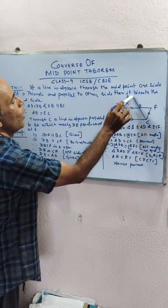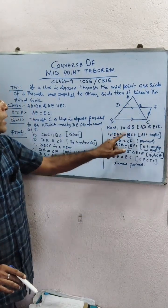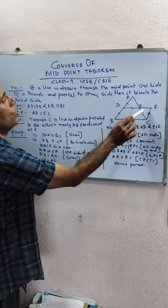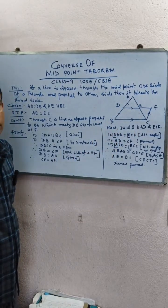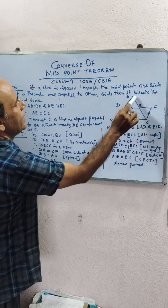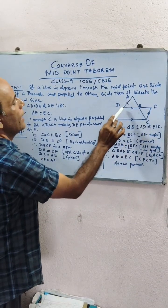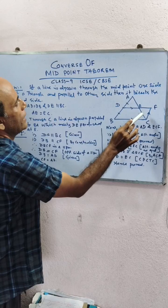Now in these two triangles, angle BAE equal to angle ECF, alternate angles. Angle ADE equal to angle EFC, and AD equal to CF.